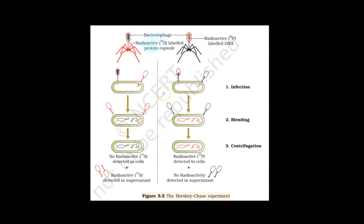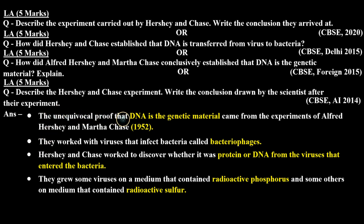When these bacteria were infected — the radioactive protein virus was not radioactive inside the bacteria, but the radioactive DNA virus was. This shows that the bacterial material is DNA, not protein. It is therefore proven that the genetic material is DNA, not protein.